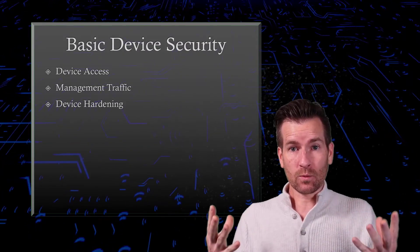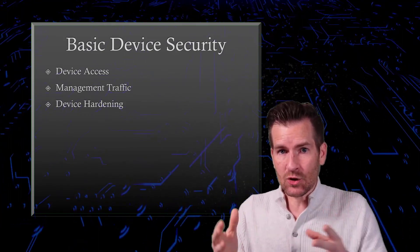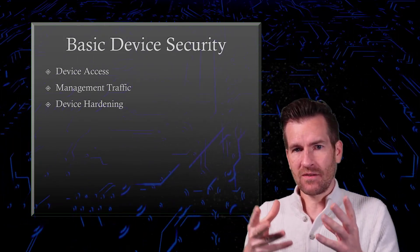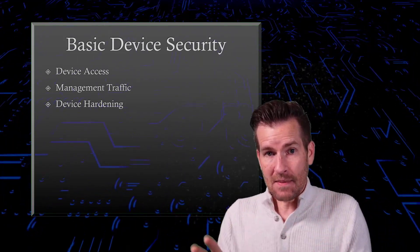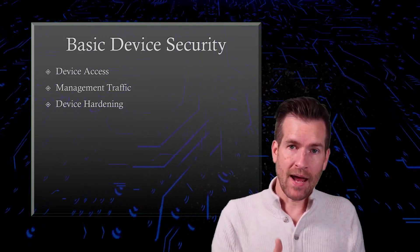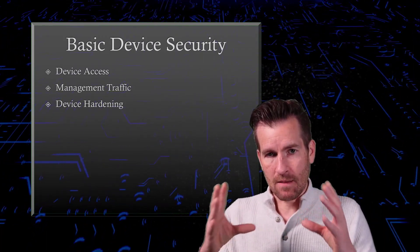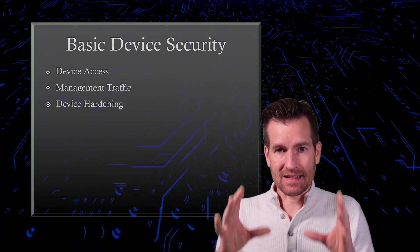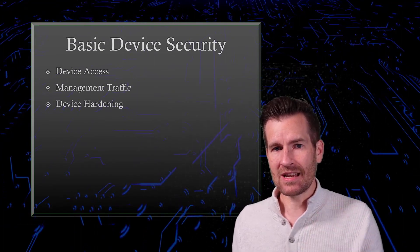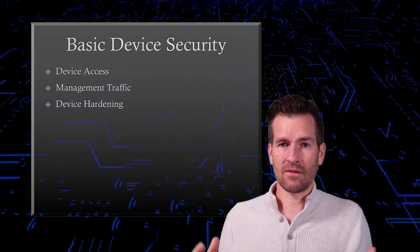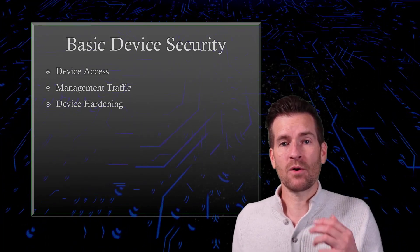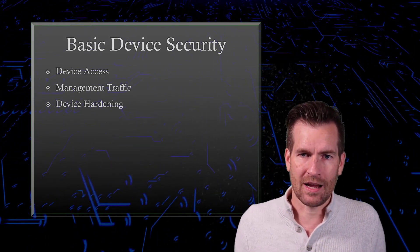That was a quick run through of some basic things you need to do on your network to keep it secure: from device access — making sure it's limited to only those who need it — to management traffic, ensuring it's isolated and secure, and device hardening, making sure patching is up to date and devices are hardened to protect against both internal and external threats.